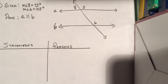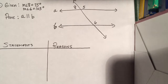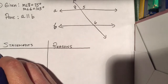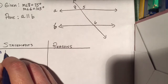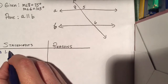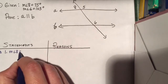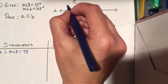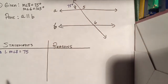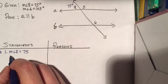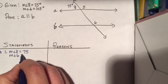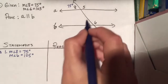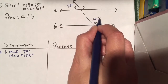We've got our statements and reasons. Given that the measure of angle 8 is 75 degrees and the measure of angle 6 is 105 degrees, prove that the lines are parallel. What always comes first is the given. So I'm given the measure of angle 8 equals 75 degrees — I'm going to label that on my picture — and I'm also given that the measure of angle 6 equals 105. Make sure you put your degree symbols. I'm going to label that on my picture.